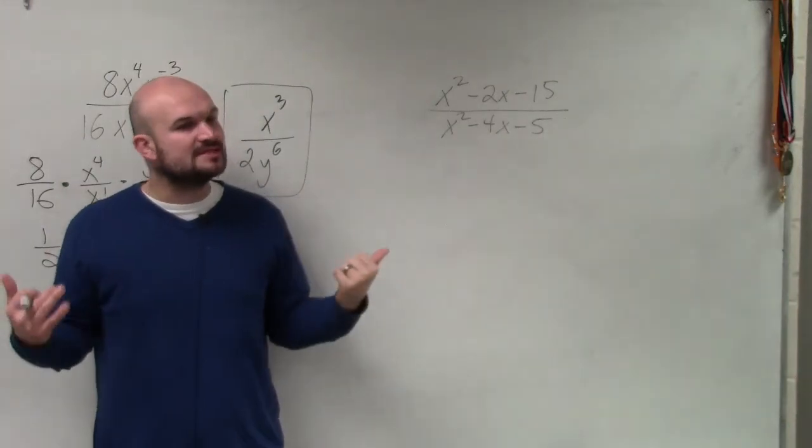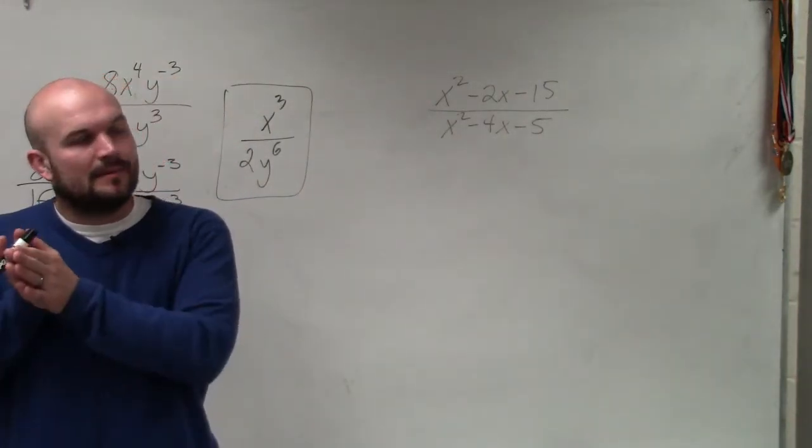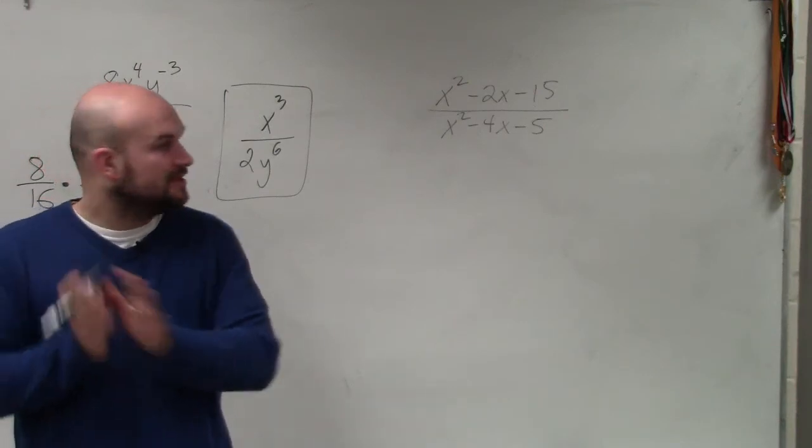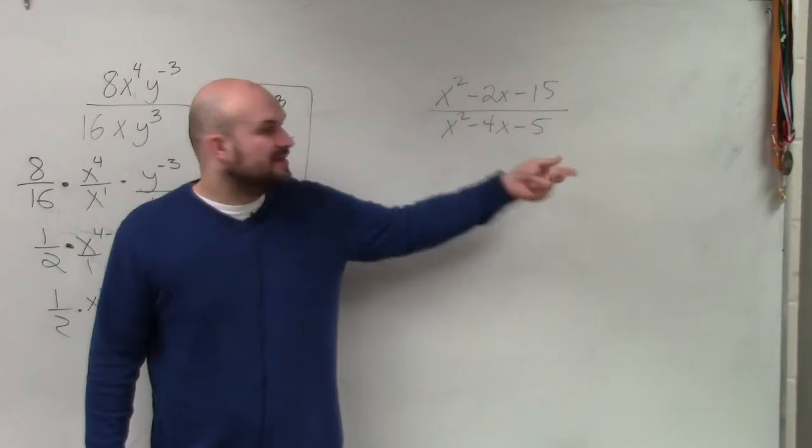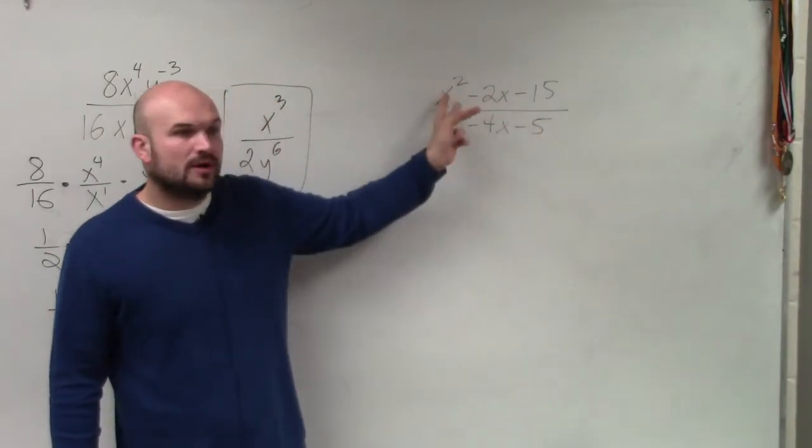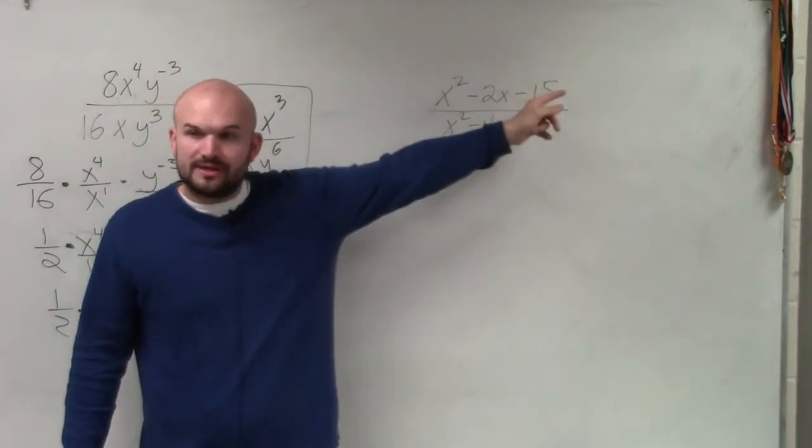So just applying the rules of exponents is not going to work because we can't divide across addition and subtraction. I can't just say the x squared divide out, or 15 divides by 3, because this 5 is divided into every one of those terms. Just like everything in this denominator divides into every single one of these terms.